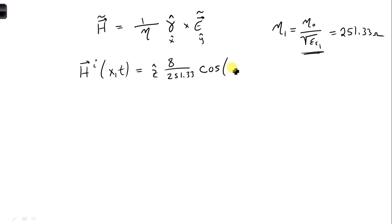so we have cosine omega t, which we found was 6 pi times 10 to the 9th t, and minus 30 pi X propagating in the X direction.